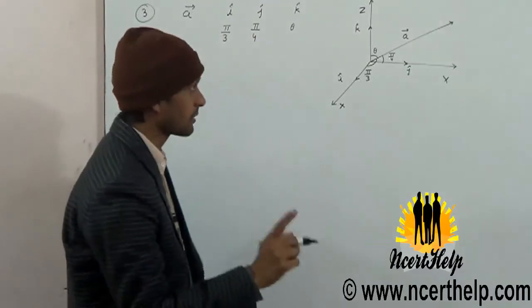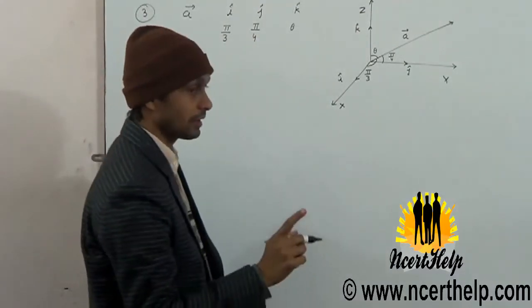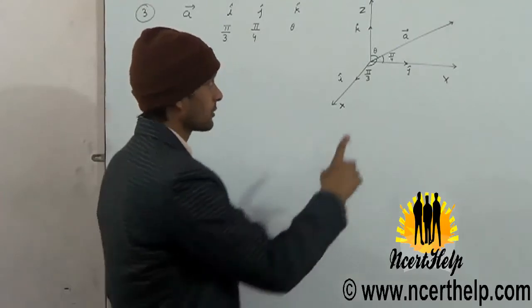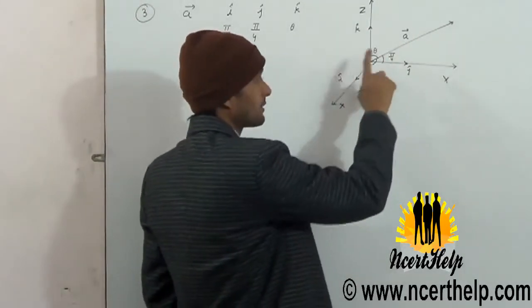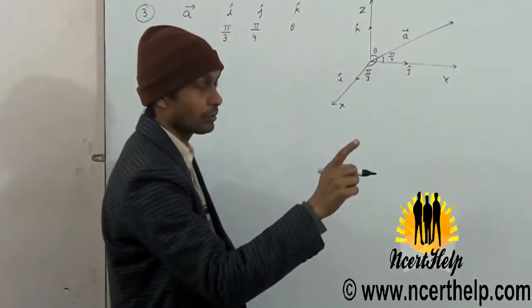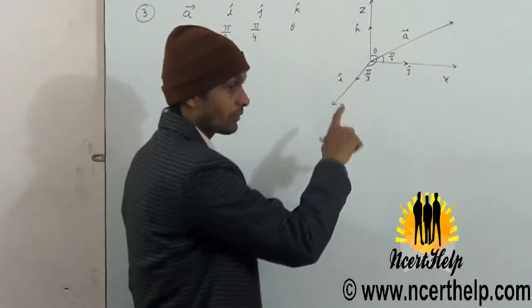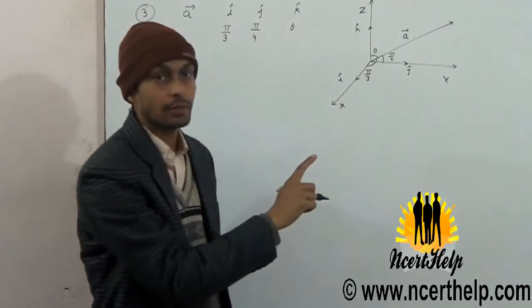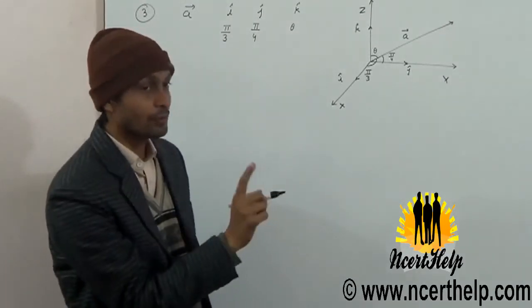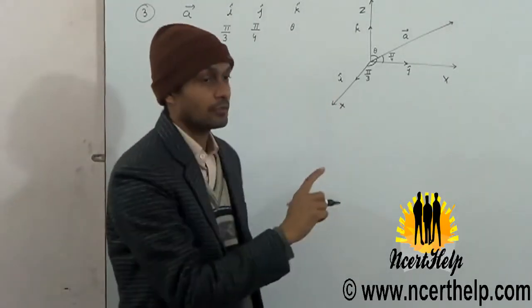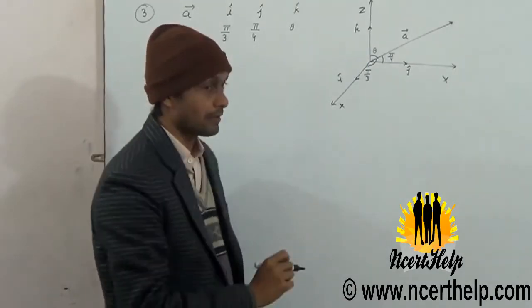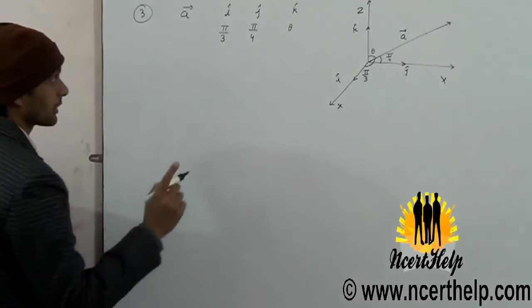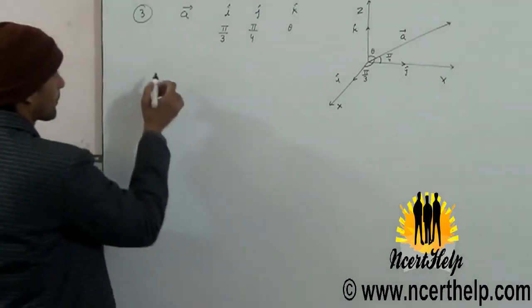Direction cosines are the cosines of the angles which a vector is making with the x, y, and z axes. L, M, N are called direction cosines. Here, cos α — alpha means the angle with x-axis = π/3, beta means the angle with y-axis = π/4, and gamma means θ.